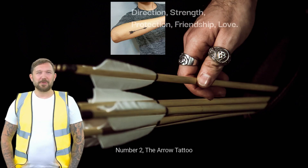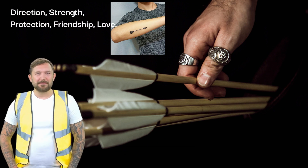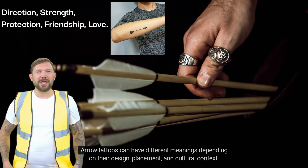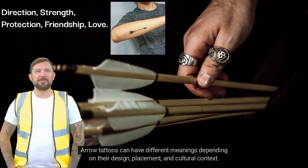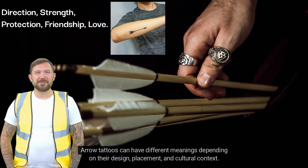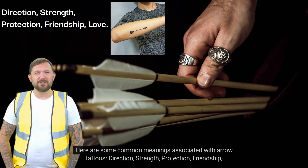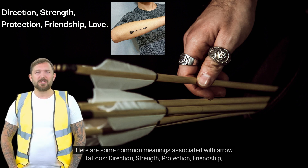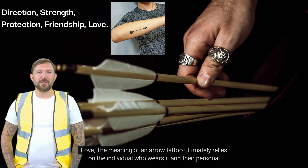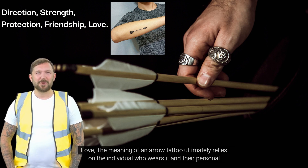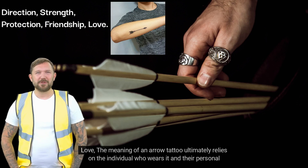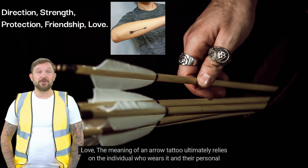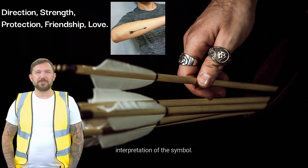Number 2. The Arrow Tattoo. Arrow tattoos can have different meanings depending on their design, placement, and cultural context. Here are some common meanings associated with arrow tattoos: direction, strength, protection, friendship, and love. The meaning of an arrow tattoo ultimately relies on the individual who wears it and their personal interpretation of the symbol.